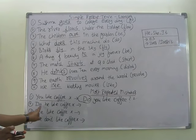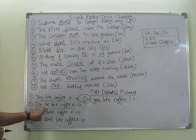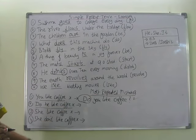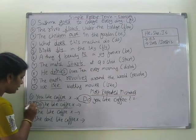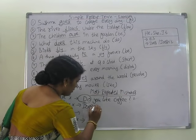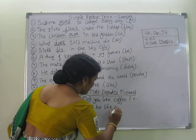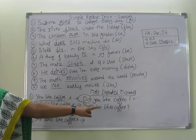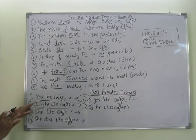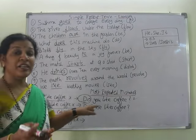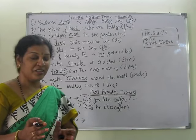Another mistake: 'Do he like coffee?' — this is wrong. Whenever we use he, she, or it, we use 'does' or 'doesn't', not 'do'. So the correct sentence is: Does he like coffee? If the answer is positive: yes, he likes. If it is a negative answer: he doesn't like.